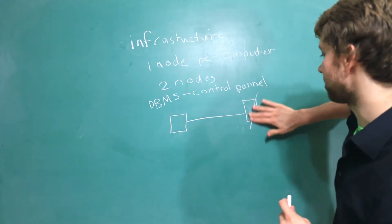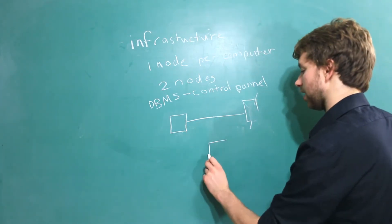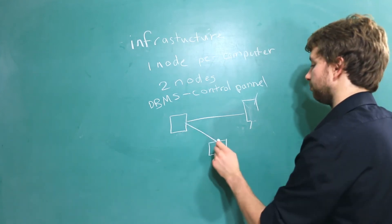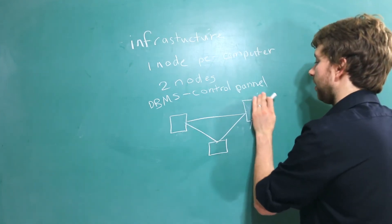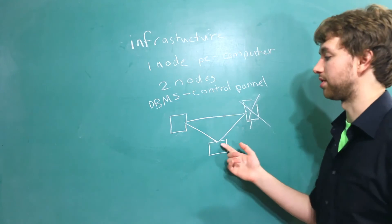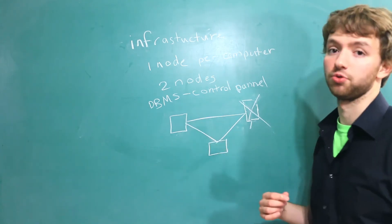So it would be better if instead we had another node down here which was the control panel for both of these. And that way if this node goes down, well now we still have access to this node and our control panel.